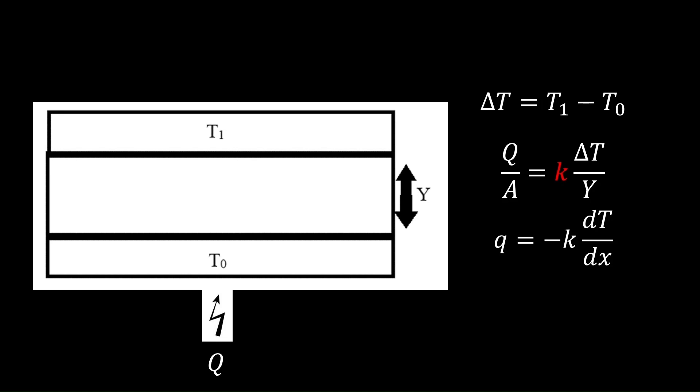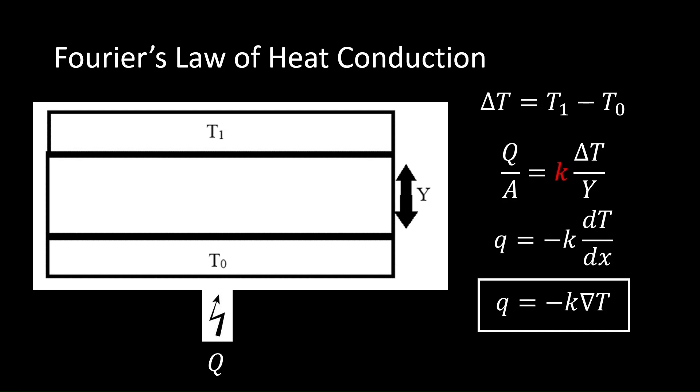If temperature varies in all directions, we can express the three-dimensional form of Fourier's law, as shown. All these equations model steady-state heat transfer, which is over very long time periods. But what happens when heat transfer is time-dependent, or when we want to model what is happening over a very short period?